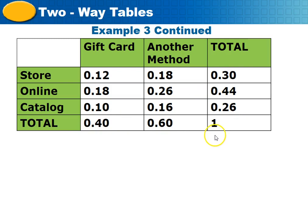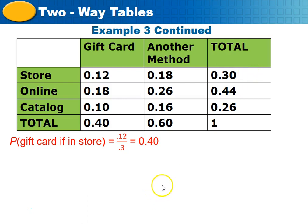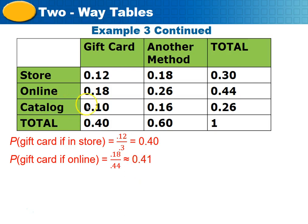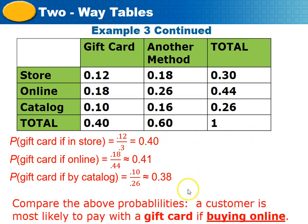The question asks: use conditional probability to determine for which method a customer is most likely to pay with a gift card. For in-store: 0.20 divided by 0.30. For online: 0.18 divided by 0.44 equals 0.41. For catalog: 0.10 divided by 0.26 equals 0.38. The highest percentage is online, so a customer buying online is most likely to pay with a gift card.